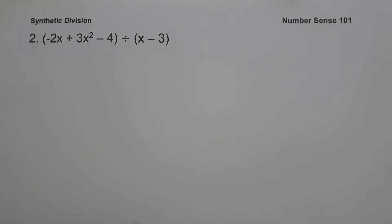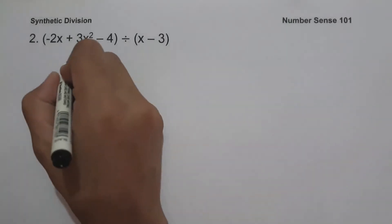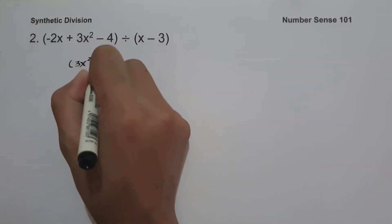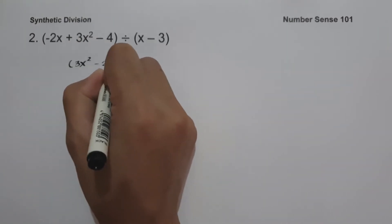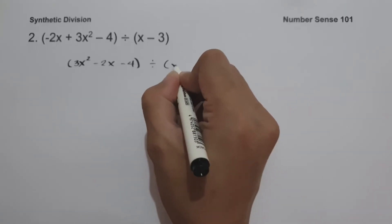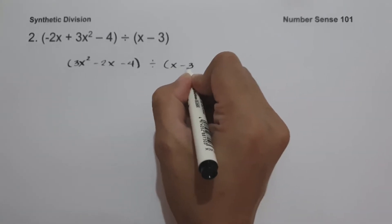On example number two, we have the quantity negative 2x plus 3x squared minus 4, divided by the quantity x minus 3. As you can see, our dividend is not written in descending power of variables, so we rewrite it as 3x squared minus 2x minus 4, divided by x minus 3.